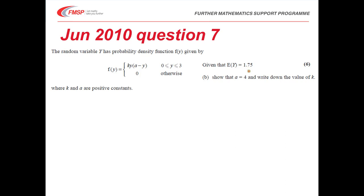Now we're given expectation of y equals 1.75, and we need to show that a equals 4 and write down the value of k. Even if we couldn't find a, we can always find the value of k for that one mark at the end. So we need to recognize that E of y equals the integral, in this case from 0 to 3, of y times by ky times a minus y.